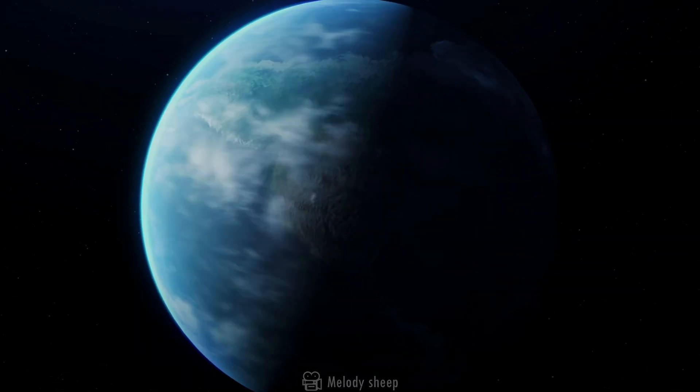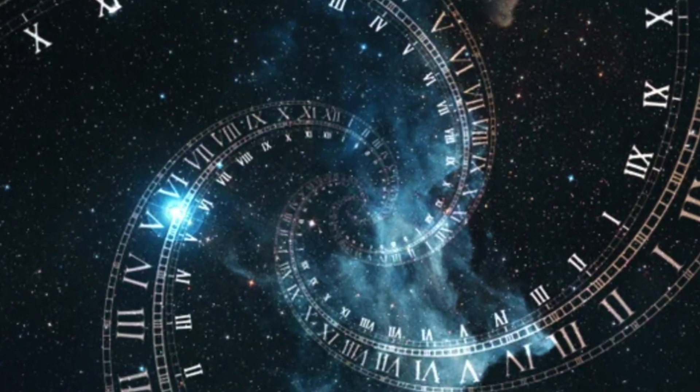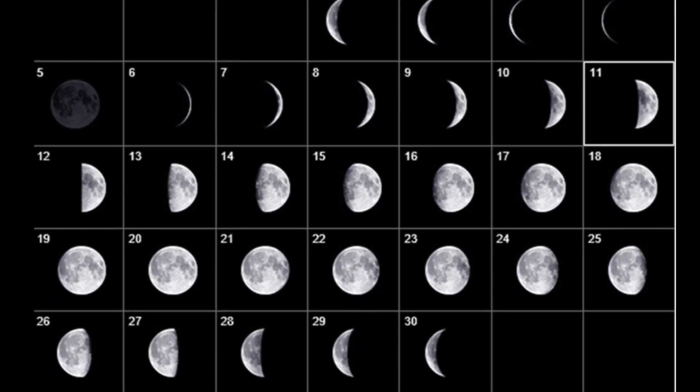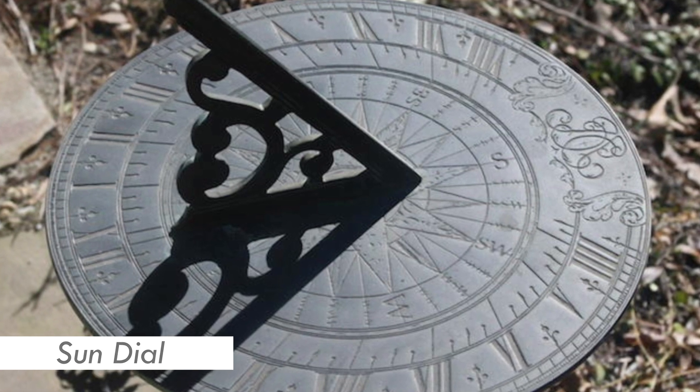For thousands of years, humans have followed different scales of measuring time, be it the lunar calendar to keep track of the days or the sundials to keep track of the hours within the days.